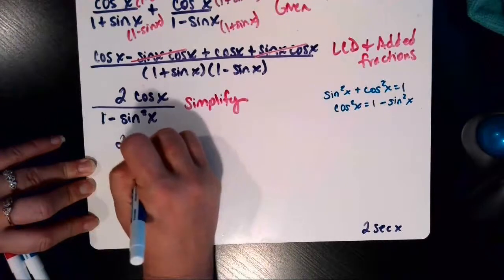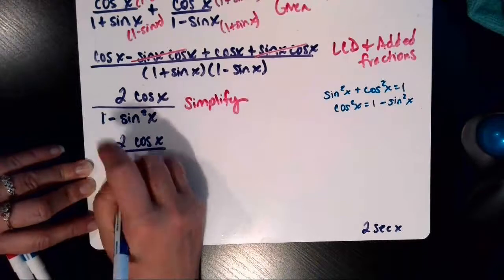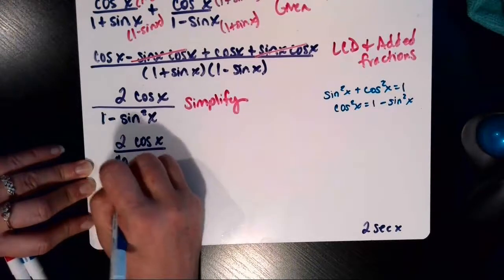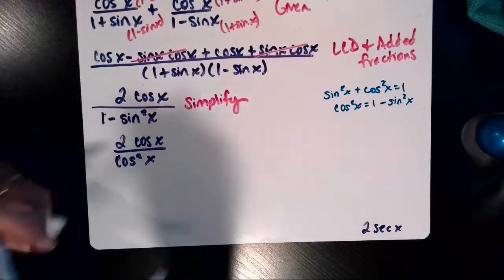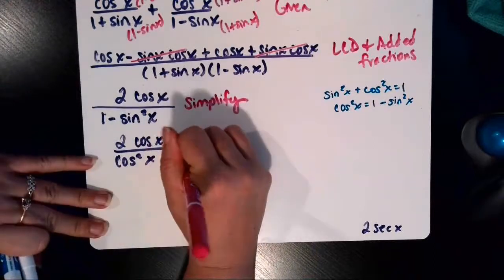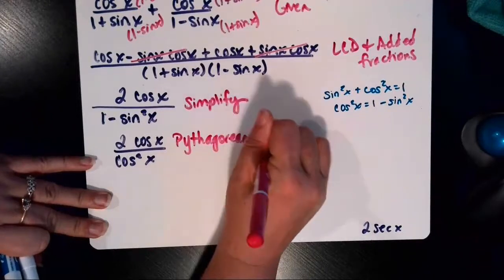So the numerator will stay the same, 2 cosine of x. But now in my denominator using that Pythagorean identity, I can change it to cosine squared x instead. And that was applying a Pythagorean identity.